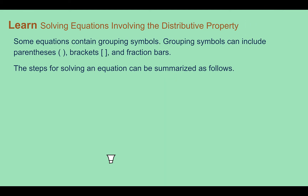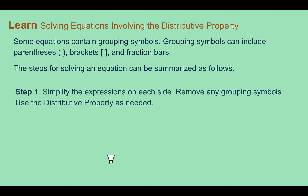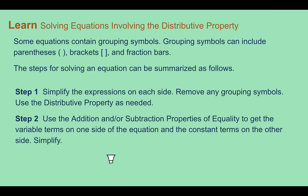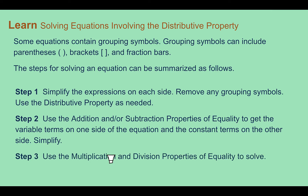Let's learn: solving equations involving the distributive property. Some equations contain grouping symbols, which can include parentheses, brackets, and fraction bars. The steps for solving are: Step 1, simplify the expression on each side — remove any grouping symbols and use the distributive property if needed, simplifying each side separately until there are no parentheses. Then use the addition and subtraction properties to get variable terms on one side and constant terms on the other. Finally, use multiplication and division properties to solve for the variable.